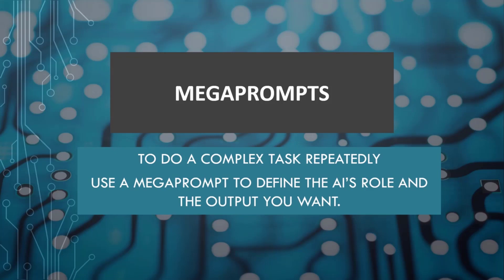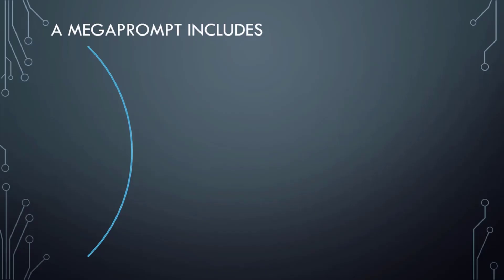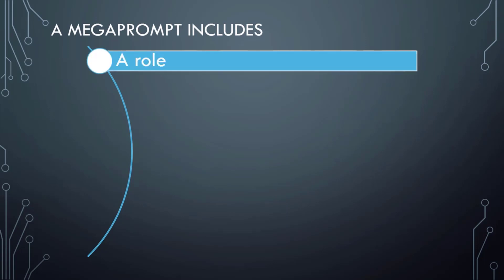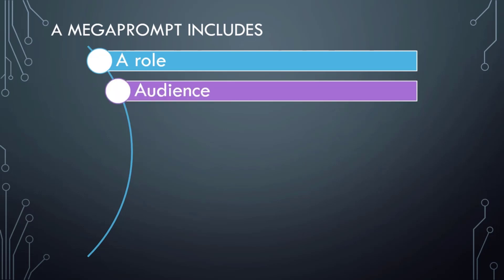If you want to use the AI to do a complex task repeatedly, you can keep building and refining the prompt. Specifically, you can use a detailed prompt called a mega prompt to define the AI's role and the output you want. A mega prompt includes a role — define the role of the AI, how would you describe an expert human equivalent — and information about the audience: who exactly is the result aimed at, including demographics, level of understanding, and types of learners.